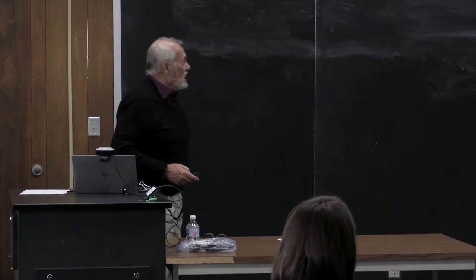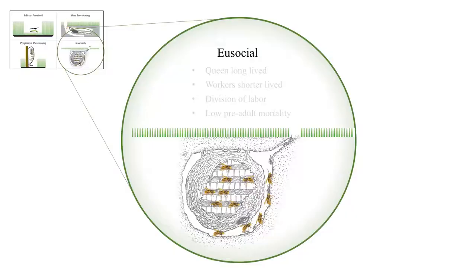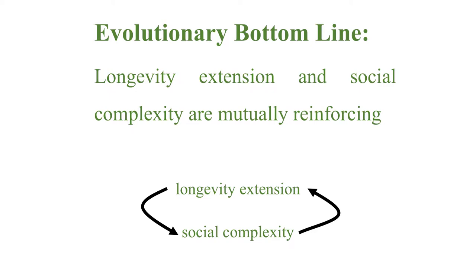In the next series of stages, the mother becomes the main reproductive — the ovary for a superorganism — and is very long-lived, while workers are short-lived and disposable. Division of labor emerges and pre-adult mortality drops. The bottom line: longevity extension and social complexity are mutually reinforcing. Longevity extension sets the stage for greater social complexity, which in turn sets the stage for greater longevity.